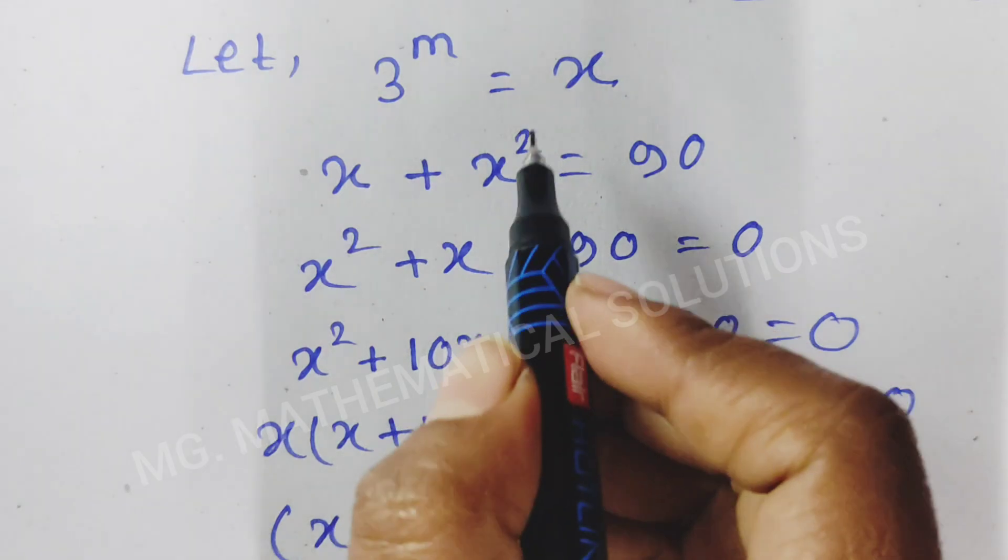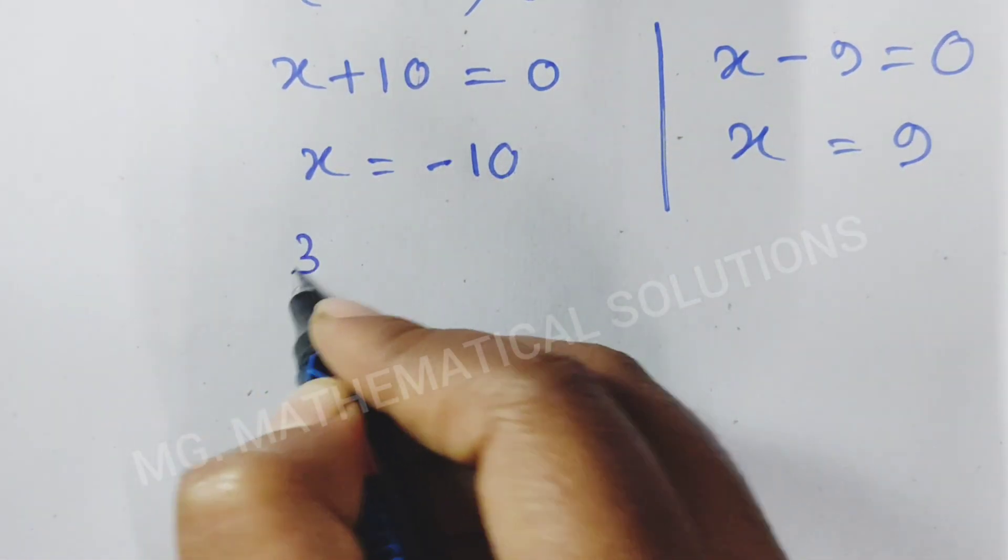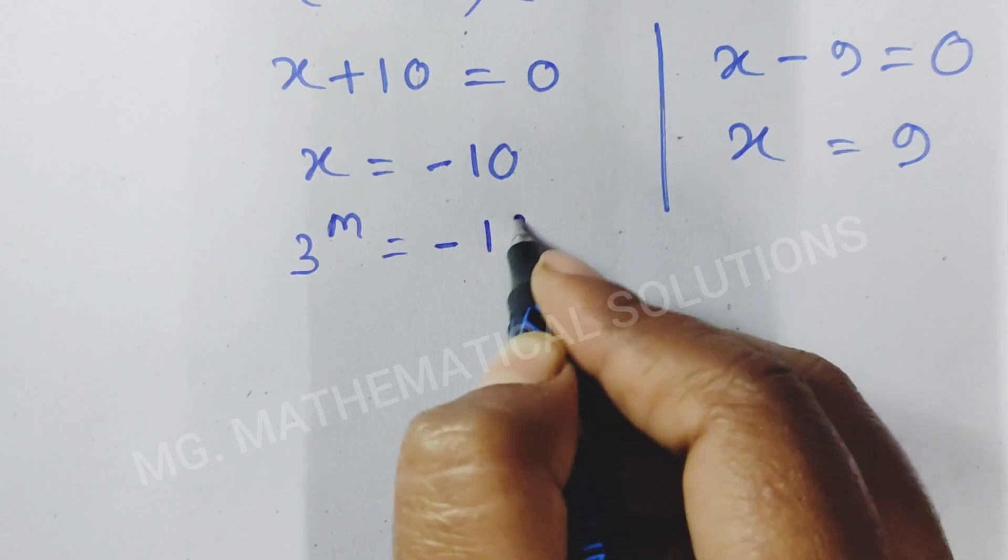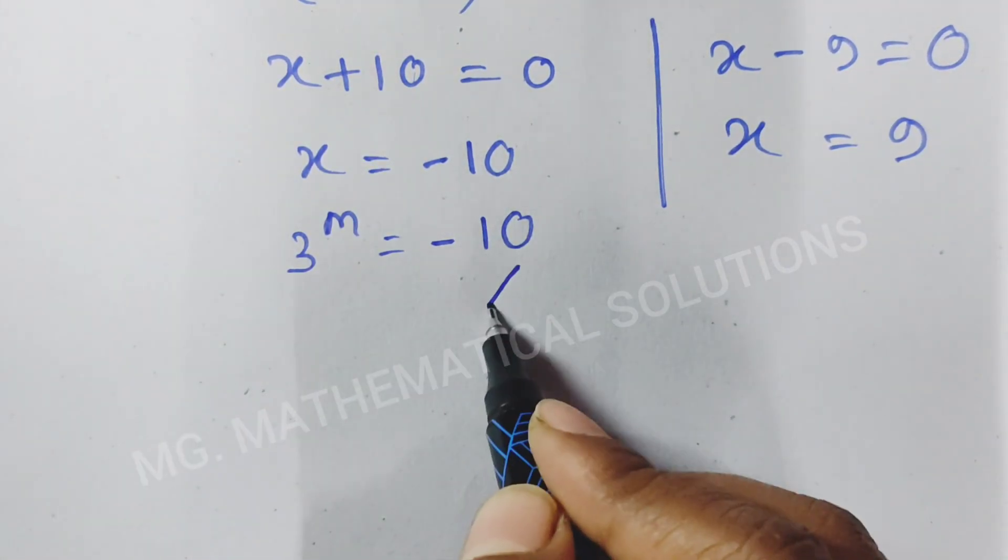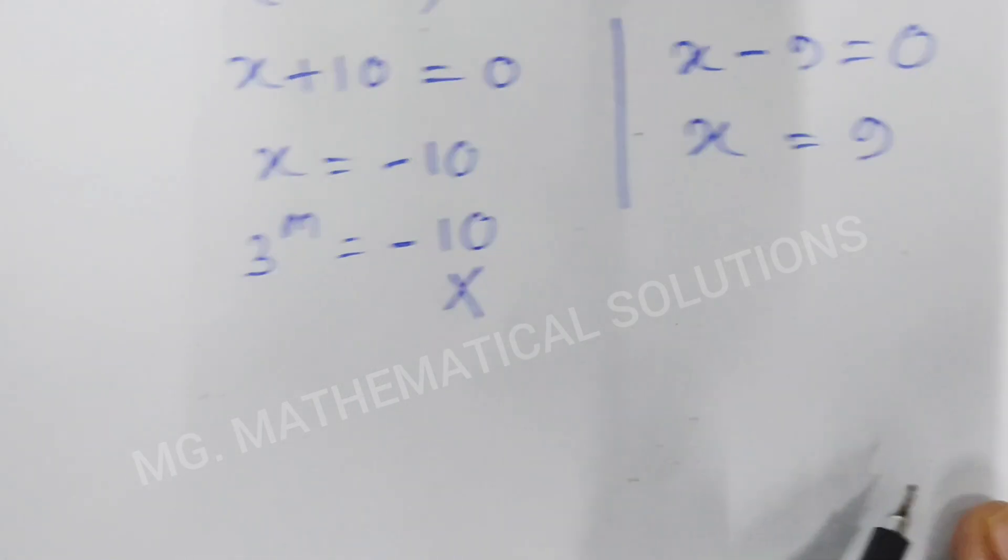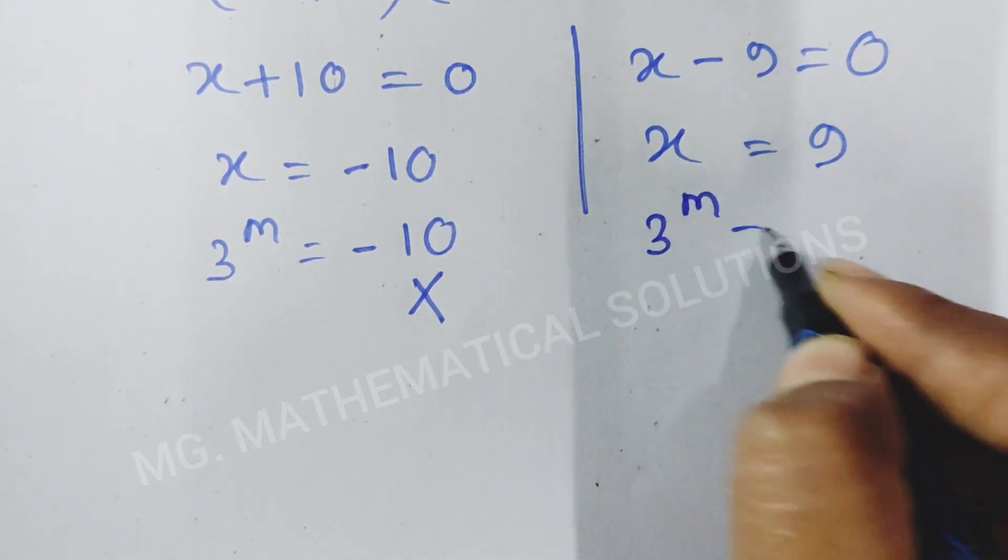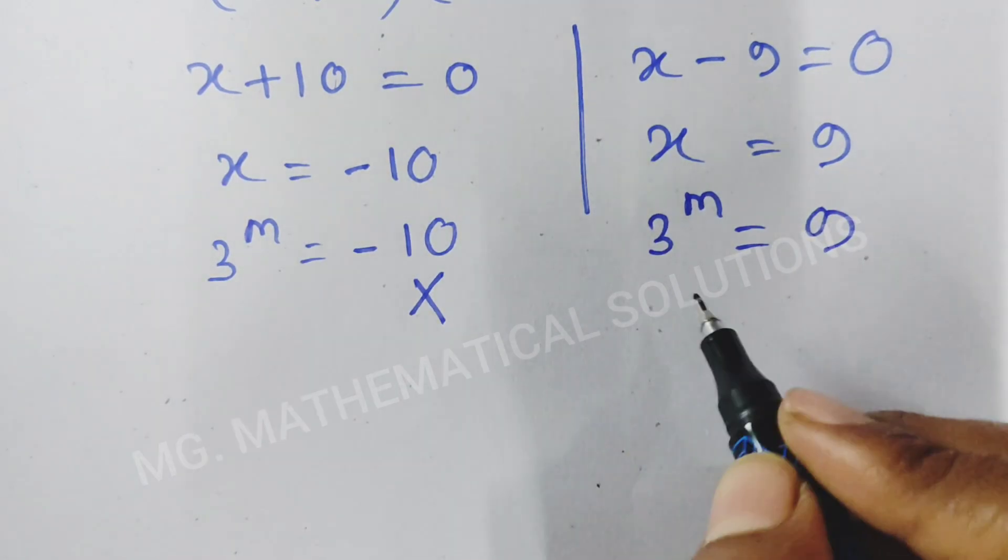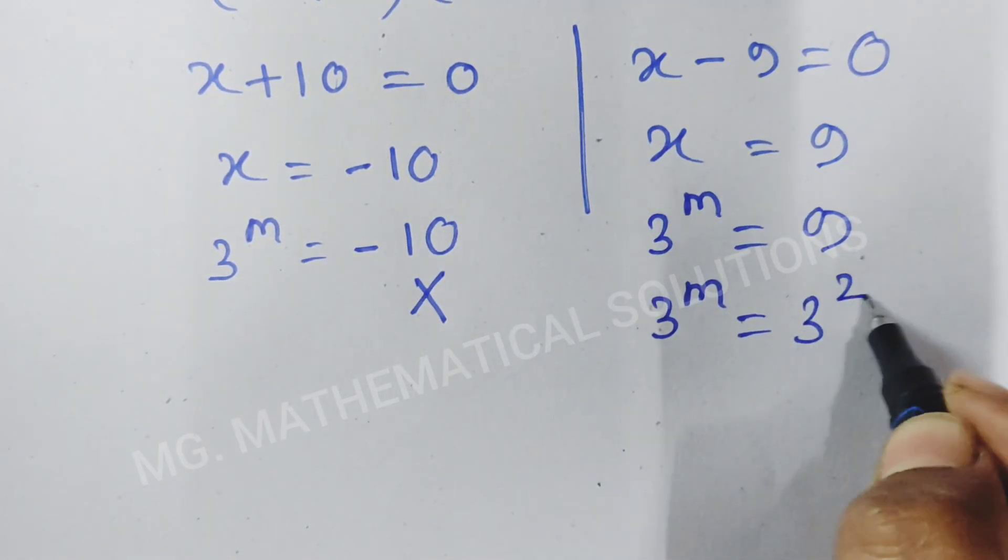Before we let 3 to the power m equal to x, so 3 to the power m equal to minus 10. If we take logarithm both sides then this is undefined so we reject this value. Here we put the value so 3 to the power m equal to 9. 3 to the power m equal to 9 means 3 square.